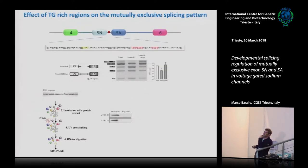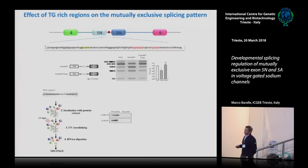To test this, we mutated the TG repeats shown in the cartoon and reinserted them upstream of our spacer element, to see if they had a regulatory role on 5A. What we saw was a return to the wild-type pattern — exon 5N that had decreased when we inserted the spacer was now included at wild-type levels, and the same for exon 5A. We then performed a pull-down analysis: synthesized the RNA, incubated it with protein extract, UV cross-linking, SDS-PAGE, and confirmed that both TDP-43 and CELF2 bind these TG repeats.